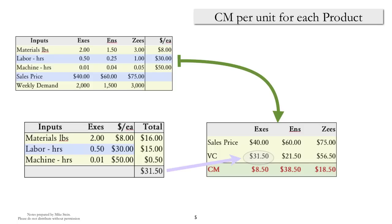As you can see, variable cost depends on the direct materials, the direct labor, and the overhead in this example. Once we have the variable cost calculated, determining the contribution margin is straightforward.